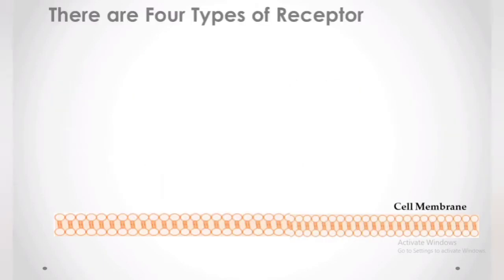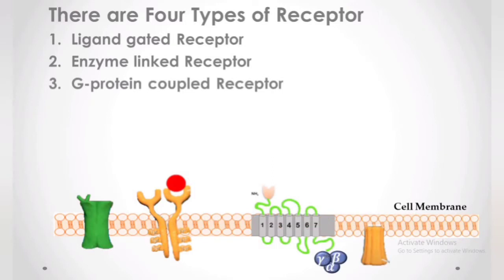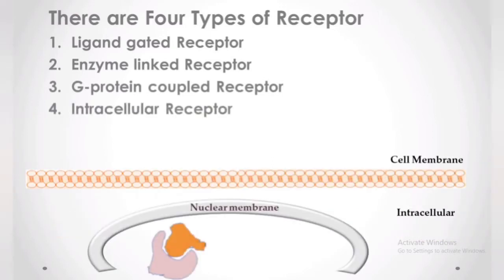There are four types of receptors: ligand-gated receptor, enzyme-linked receptor, G-protein coupled receptor, and intracellular receptor.